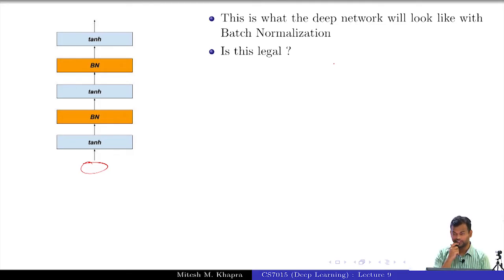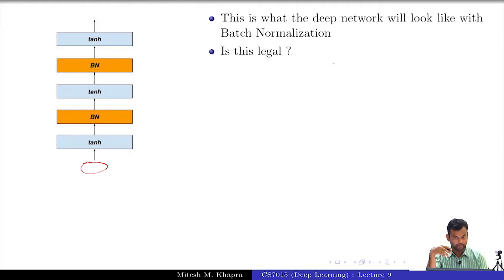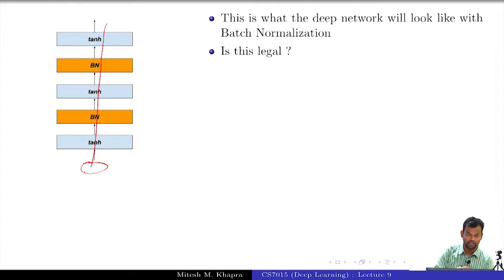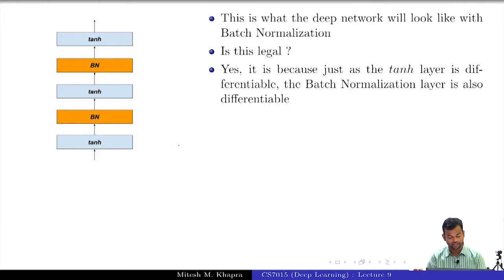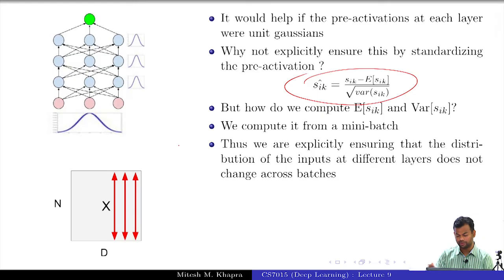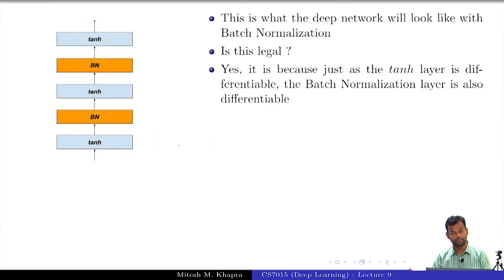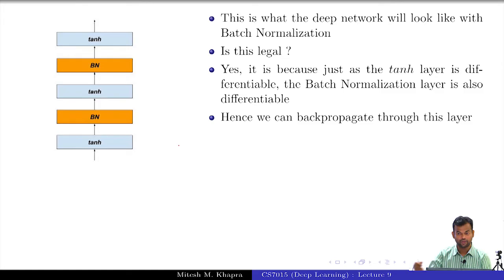Is this operation legal? In this course, anything that is differentiable is legal. So we have to make sure that this added operation is differentiable so that gradients can flow through it. We should be able to compute the gradient of the loss with respect to a_i. It turns out the operation is actually differentiable — you can work that out. The operation is simple and clearly differentiable, which is why you can add these batch normalization layers and back-propagate through them.